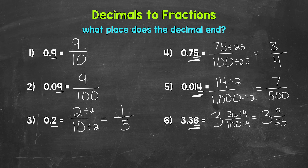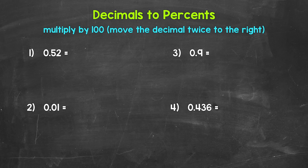So there's how to convert decimals to fractions. Let's move on to decimals to percents. When going from a decimal to a percent, all we need to do is multiply by 100. Multiply the decimal by 100, and that will give us the percent. A quick way to multiply by 100 is to move the decimal twice to the right.